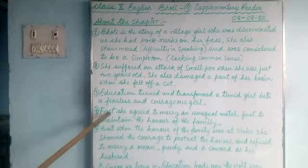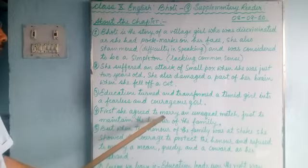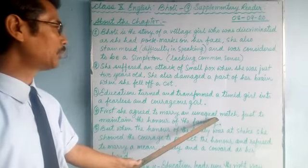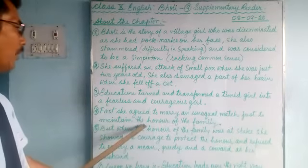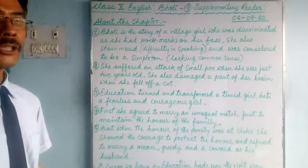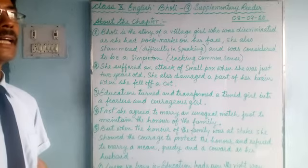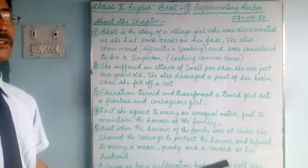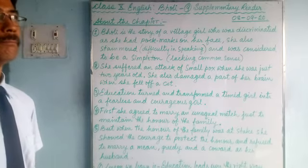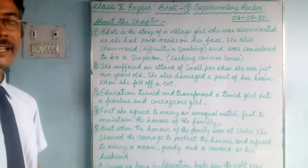According to the chapter, she first agreed to marry an unequal match — meaning quite an old, aged person — just to maintain the honor of the family. To maintain the family's respect in society, she agreed to marry an unmatched, aged person who was also lame. She remained quiet and did not say anything. She agreed.